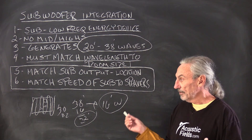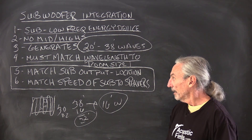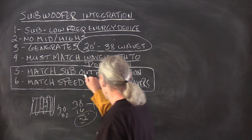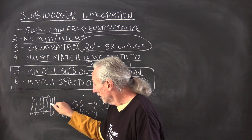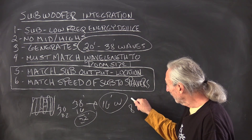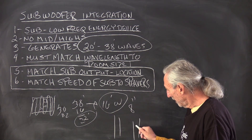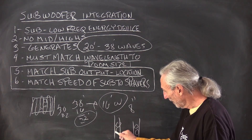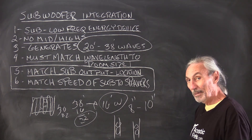So you want to make sure that it balances what is going on in the room. We can calculate that — it is too much for videos like this but call me up and I can do it for you. So we match the output of the low frequency energy device to the pressure map of the room. What we do match to the speakers is the speed of the driver.